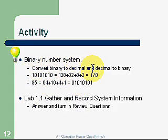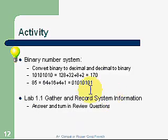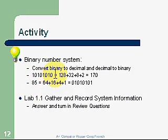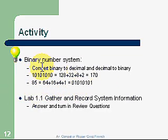Now we can do just the opposite: take a number such as 85 and convert it into binary. We wouldn't use the first position because 128 would be too much. The second position is 64, so we set that. We still have 21 remaining, so we set the 16, the 4, and the 1. We're going to do an activity and spend some more time on this — there is an activity available on the binary numbering system.